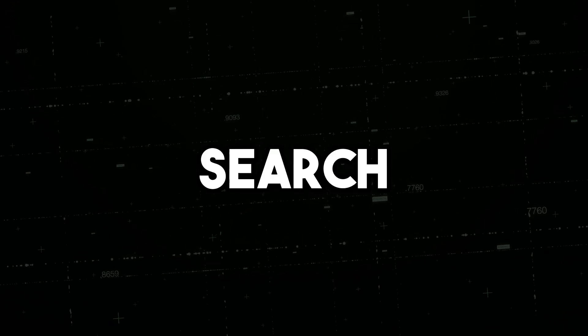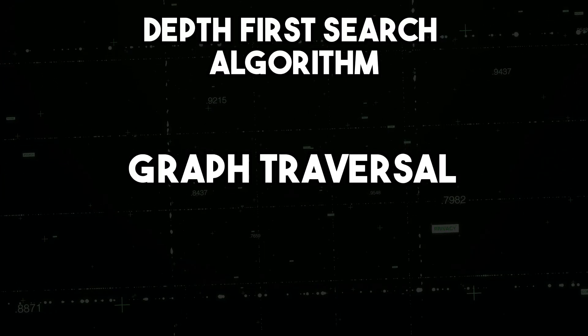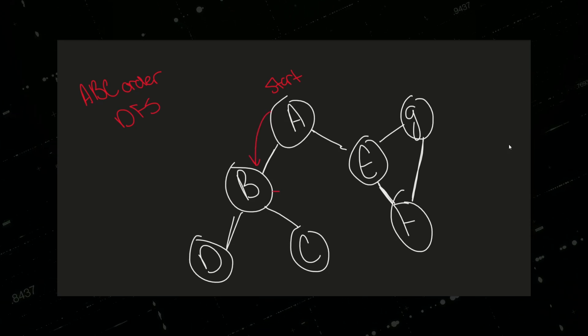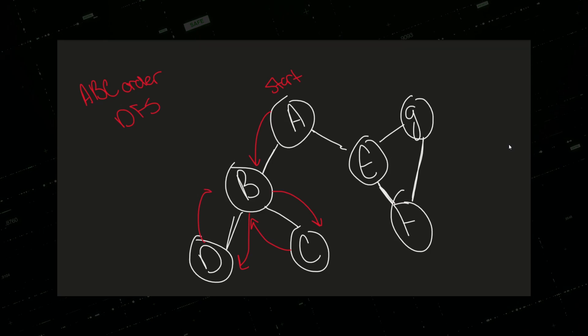The Depth First Search Algorithm is a graph traversal algorithm that starts at a given vertex and explores as far as possible along each branch before backtracking.